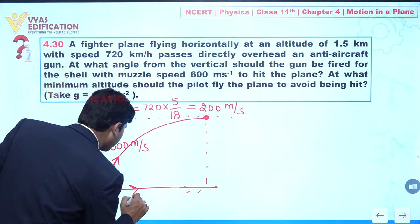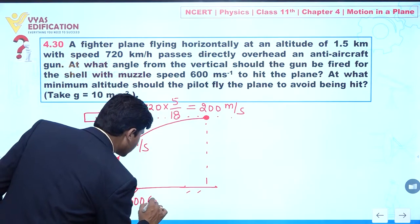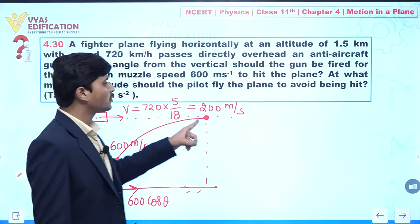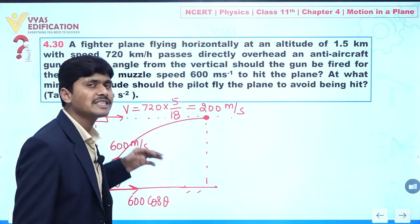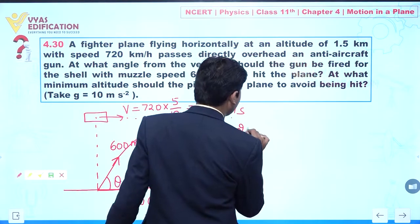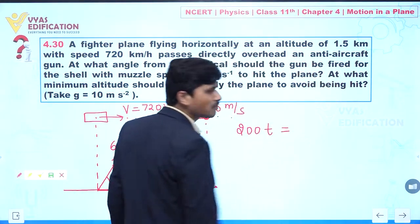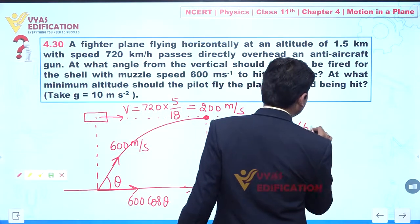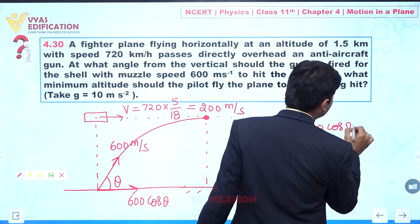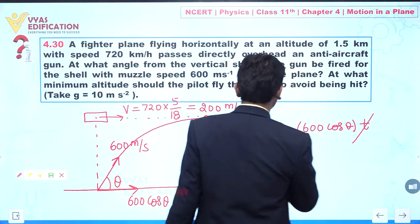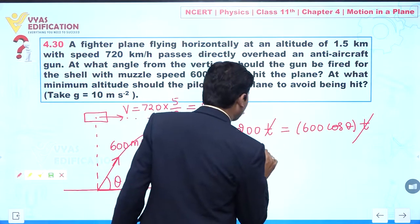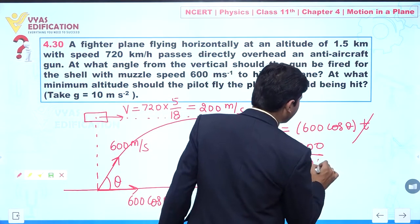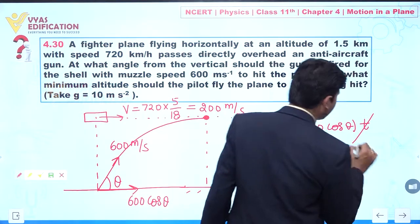Let us suppose this aircraft reaches a certain position in time t. So the distance covered by the aircraft is 200t, and this should be equal to 600 cosθ multiplied by the same time t. From here, t and t cancel out, and the value of cosθ is given by 200 divided by 600, which equals 1 by 3.